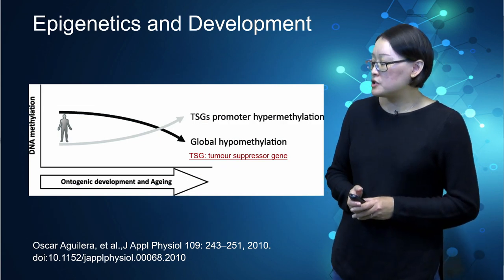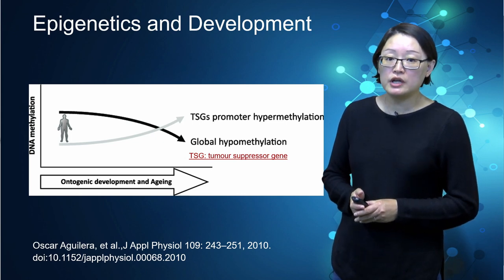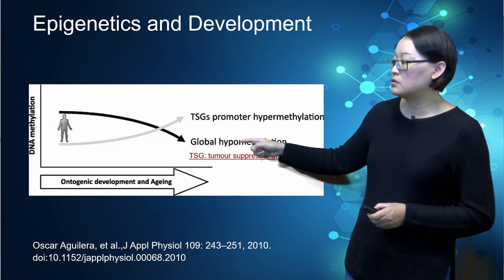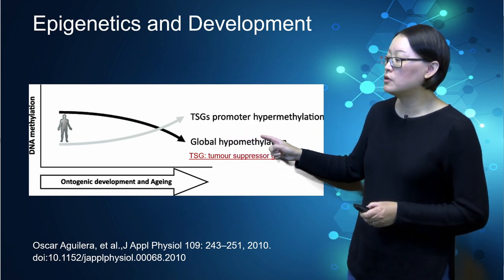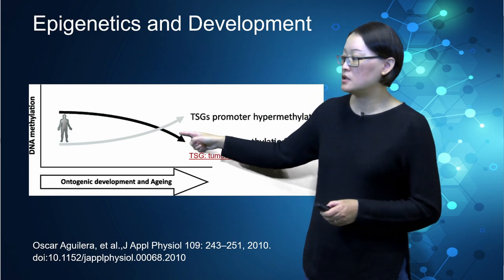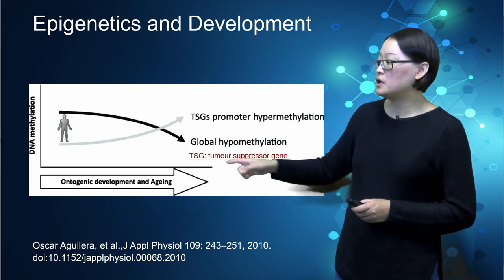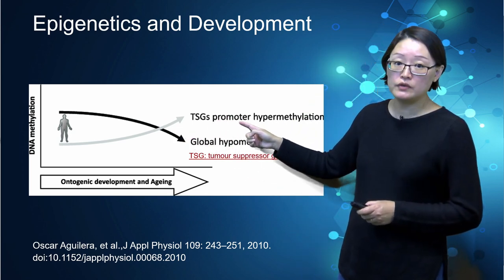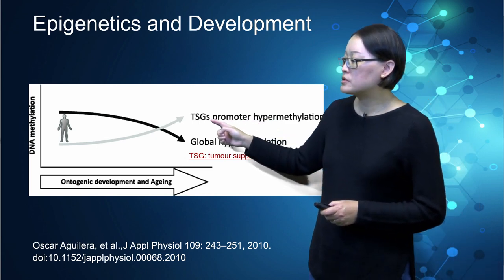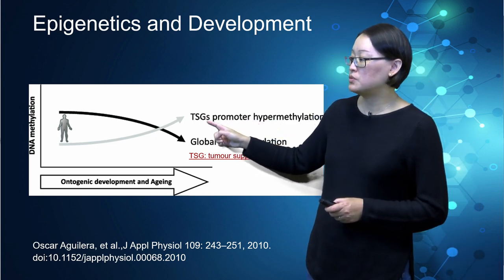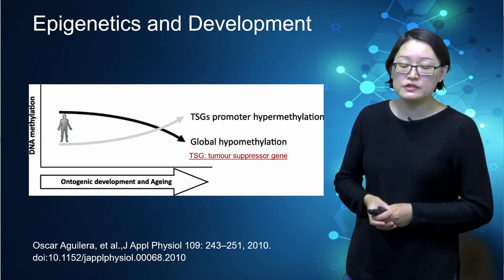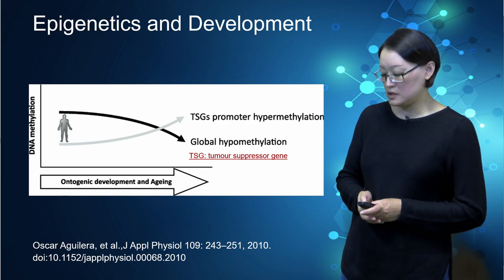Furthermore, our epigenetics also changes with age. As we grow older, there is a global reduction in DNA methylation, as shown here. At the same time, there is an increase in promoter hypermethylation with regard to tumor suppressor genes, or TSGs. This is associated with an increased risk of cancer.